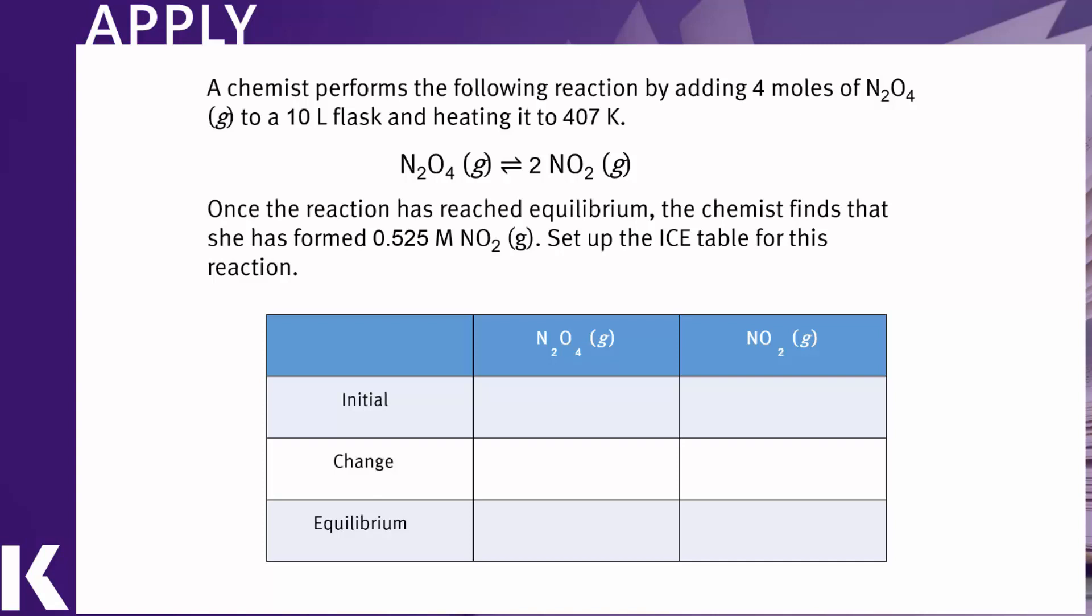So in this case, let's start with what we know. We know there's four moles of our N2O4 reactant and that is in a space of 10 liters. Therefore, the number of moles per liter is 0.4. For our product initially, we have none present at all. Therefore, our initial concentration of NO2 is zero.